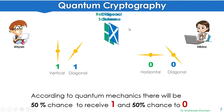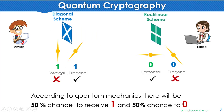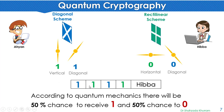Even if we exchange both filter types, the same probability applies. If the horizontal state is sent through a diagonal filter, we get a random result. The diagonal state also gives a 50% chance of receiving 0 or 1. This is according to quantum mechanics law. When the data is received, we apply this probability — the 50% incorrect readings are removed, and the remaining 50% that was correctly read becomes the key.